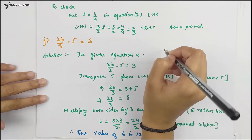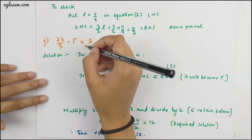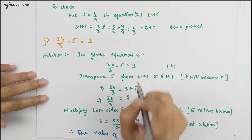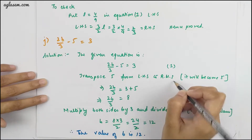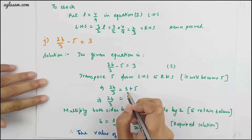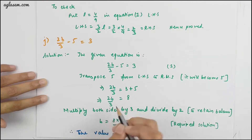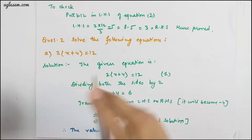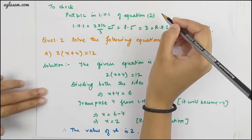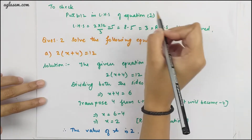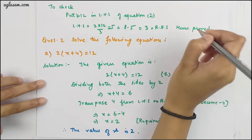The J part is 2b/3 − 5 = 3. Transposing 5 from LHS to RHS, it becomes +5. So 2b/3 = 3 + 5 = 8, giving us b = 12. Therefore the value of b is 12. To check, put b = 12 into the LHS — that equals the RHS. Hence proved.